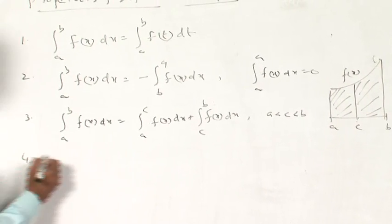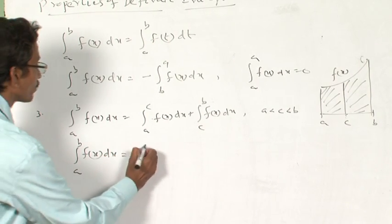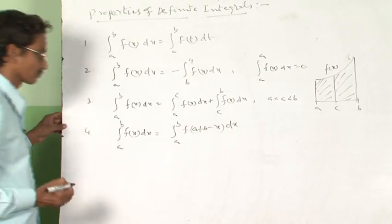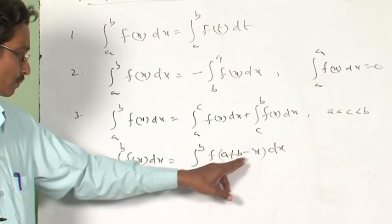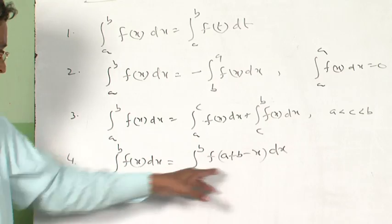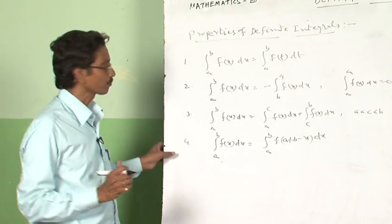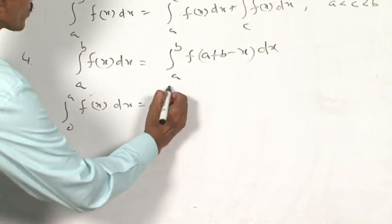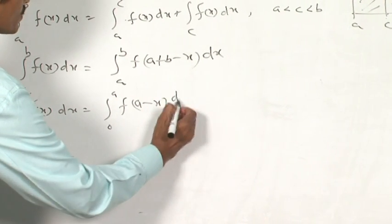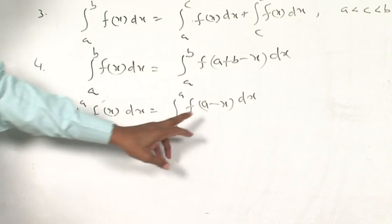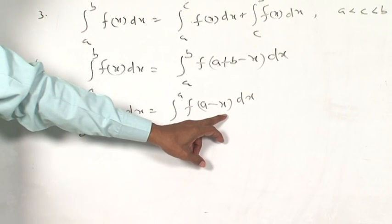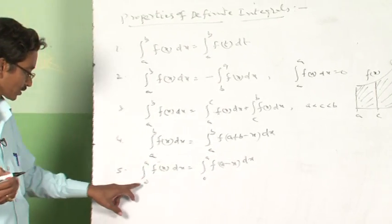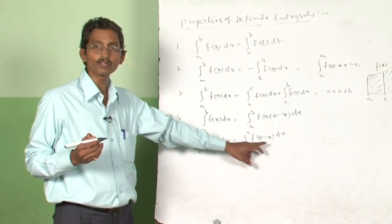Property 4: the integral from a to b of f(x) dx equals the integral from a to b of f(a + b − x) dx. Property 5: the integral from 0 to a of f(x) dx equals the integral from 0 to a of f(a − x) dx. This follows by taking the substitution t = a − x, which also changes the limits, and after calculation we get the stated result.